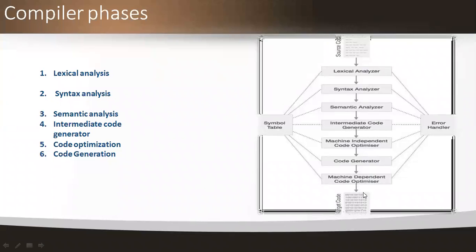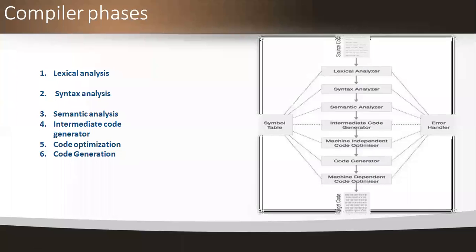The symbol table acts as a data structure used to store everything that we perform during the process of compilation. Everything should be stored in a symbol table. There is another sub-phase — the error handler. The error handler works by finding and rectifying errors at each and every phase itself.